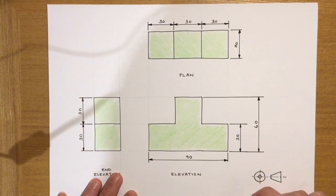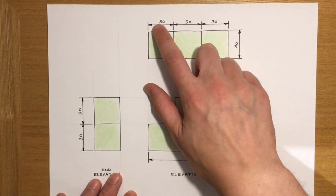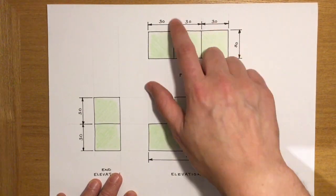We've also got our two different types of organisation. We've got our chain dimension where each dimension links to one another so they share a leader line and it's one consistent line of dimensions.